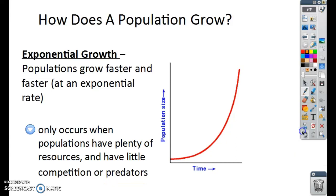So exponential growth, this is actually how human growth is occurring right now. It's at an exponential rate. So the human population is growing faster and faster and faster.